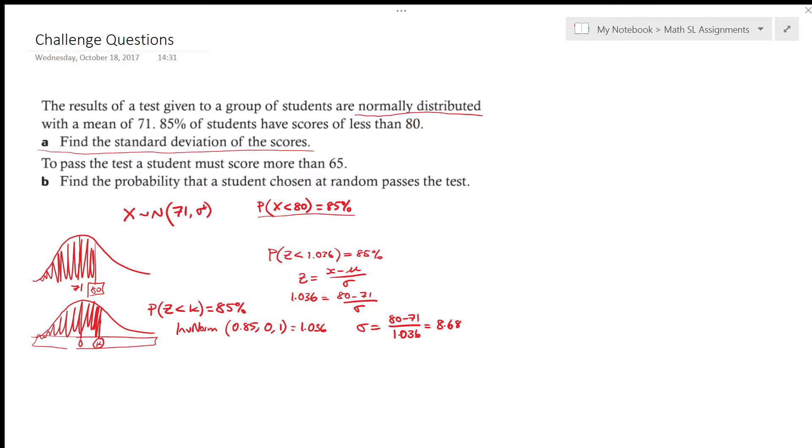Okay, let's take a look at part B of this question. So we have all of the information now. Now we know that we've got a normal distribution with a mean of 71 and a standard deviation of 8.68.